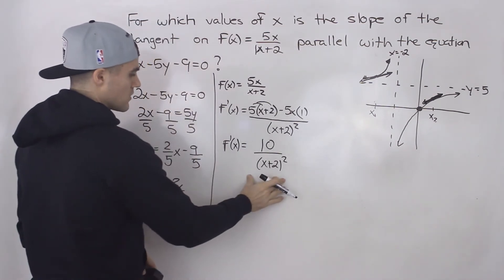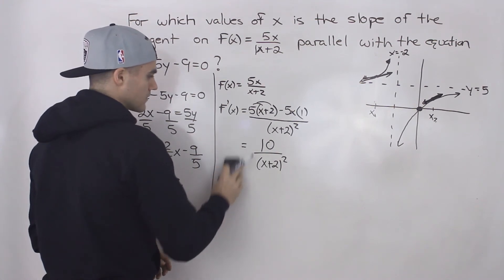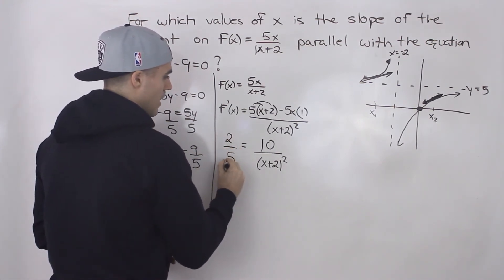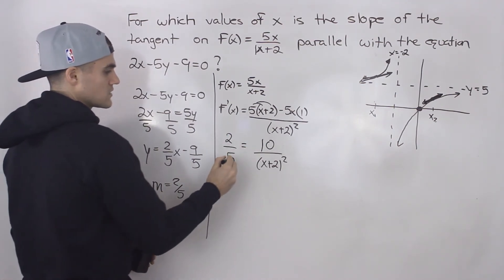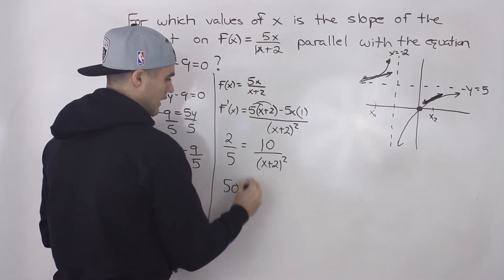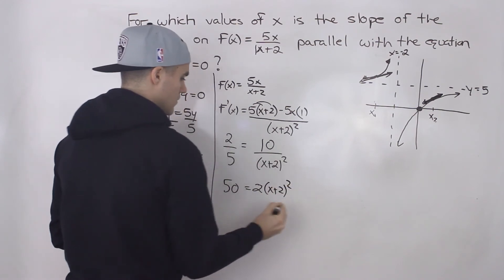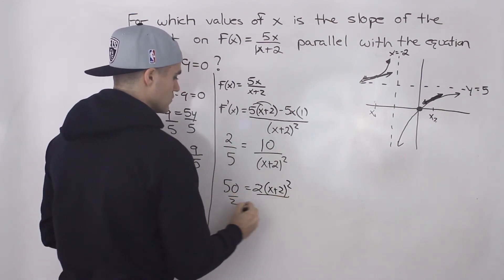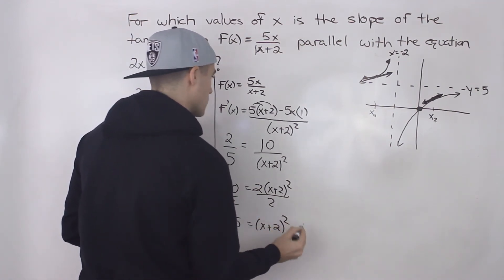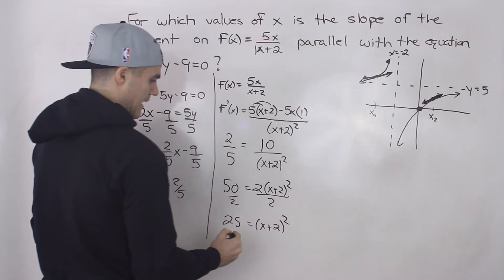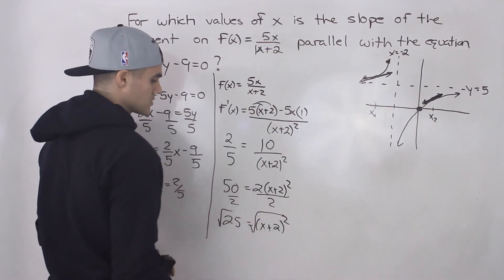And then we have to make this derivative equal to 2 over 5 and then solve for the x values. So if we do that, make this equal to 2 over 5, and then we can just cross multiply and solve for those x values. So 5 times 10 is 50, and then 2 times that expression. We can divide both sides by 2, so we'd have 25 equals x plus 2 squared. And then we can take the square root of both sides to get rid of that square here, to get rid of that exponent 2.